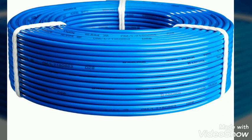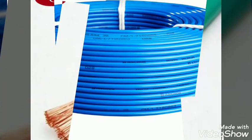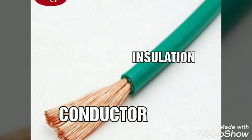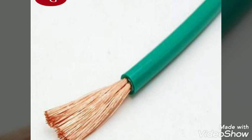First, let's take a look at wires. As shown in this picture, wires have only one insulation layer, and the other part is the conductor. In this picture, the green one is the insulation and the copper color is the conductor.